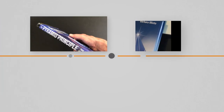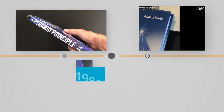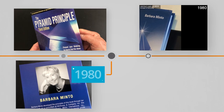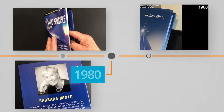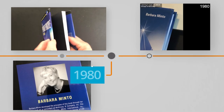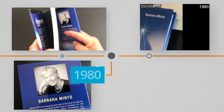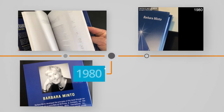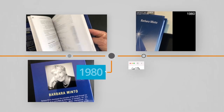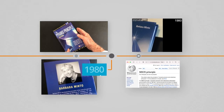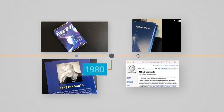Another McKinsey person who had a great influence on IBCS was Barbara Minto. The SUCCESS chapter structure is based on her MECE concept — mutually exclusive and collectively exhaustive.